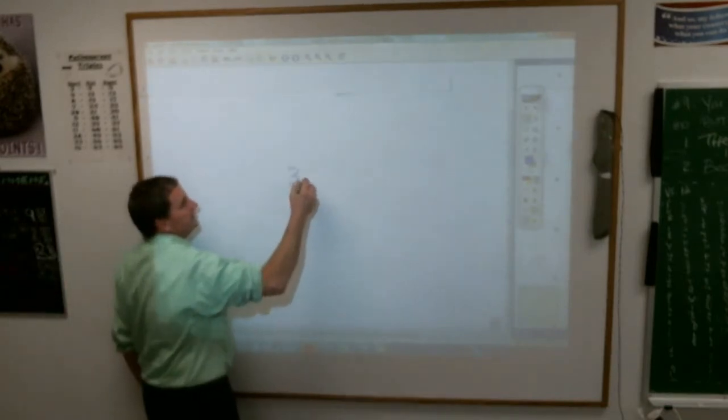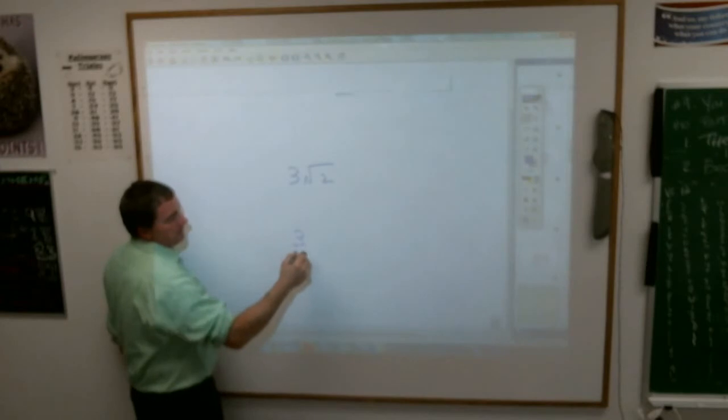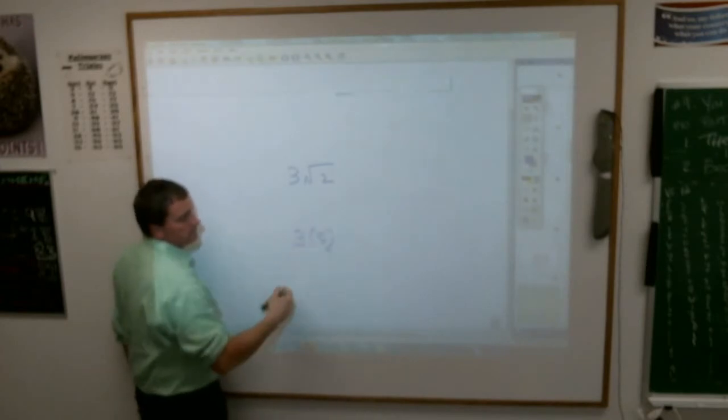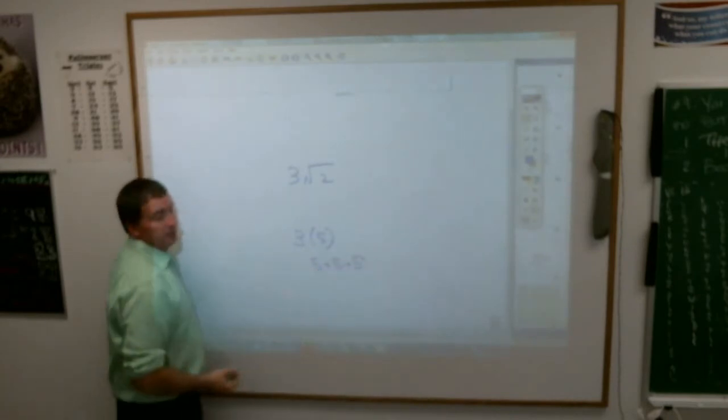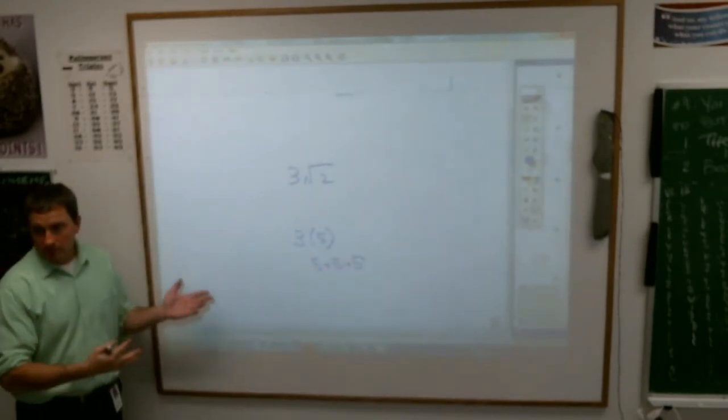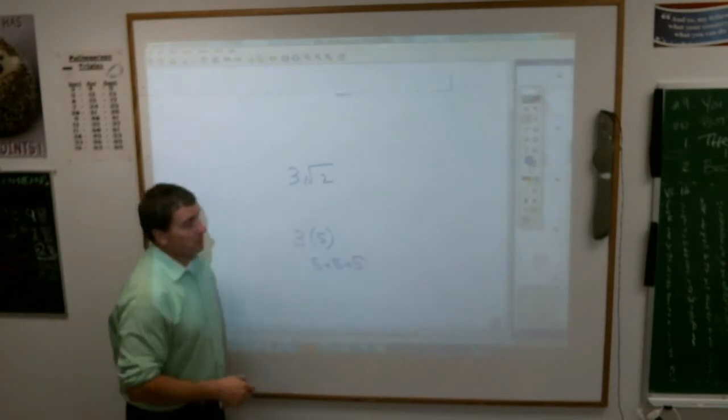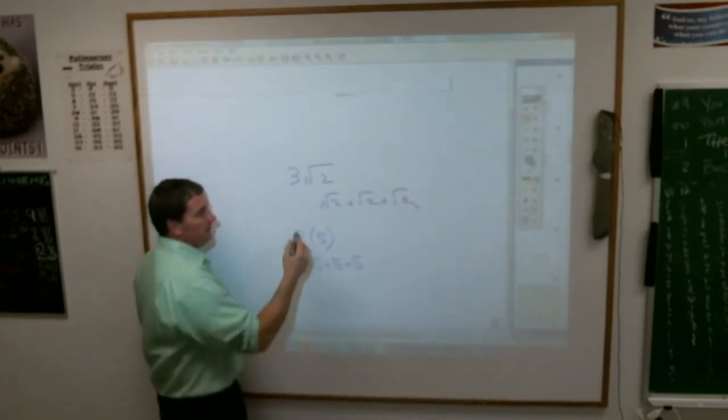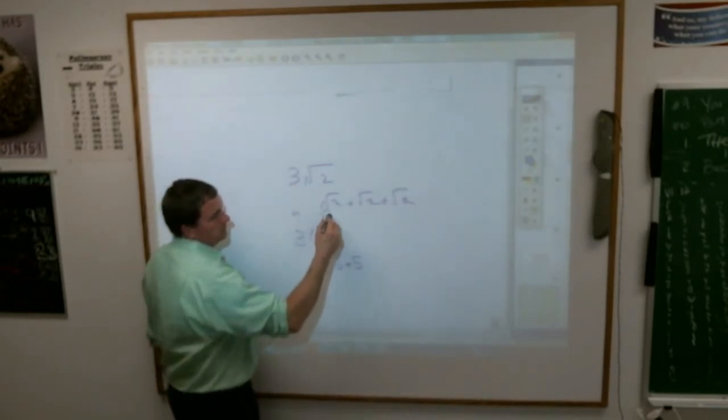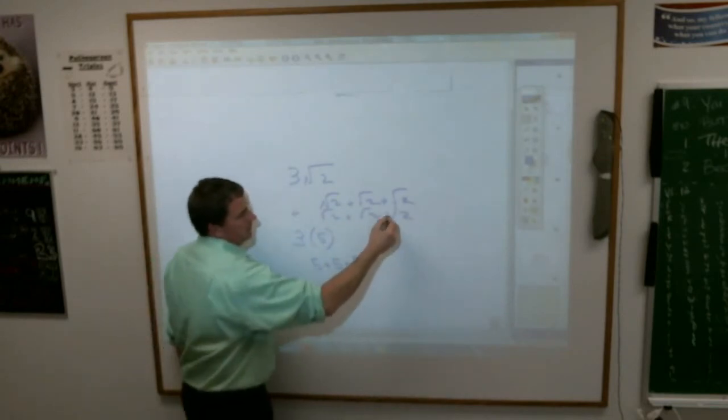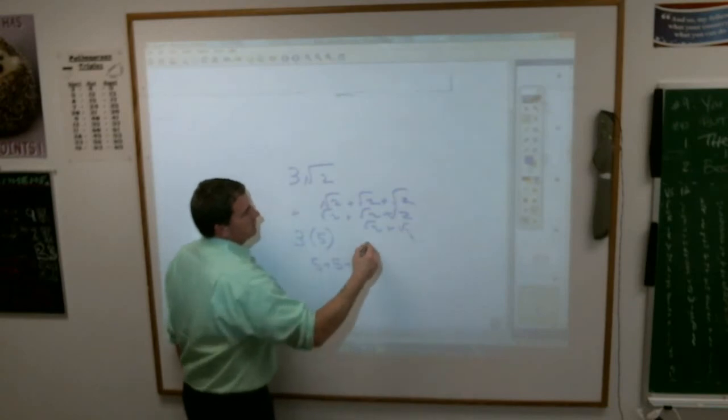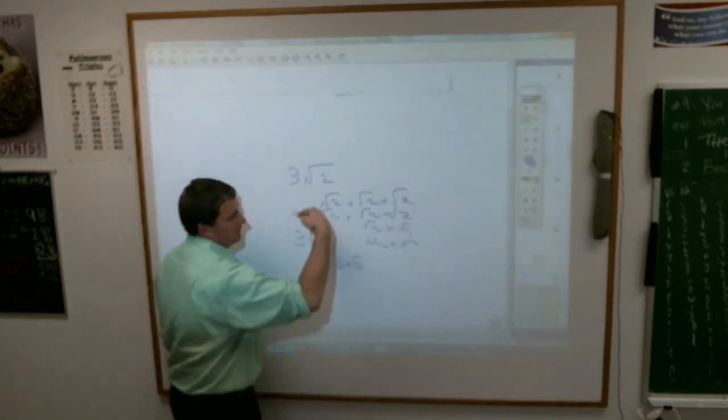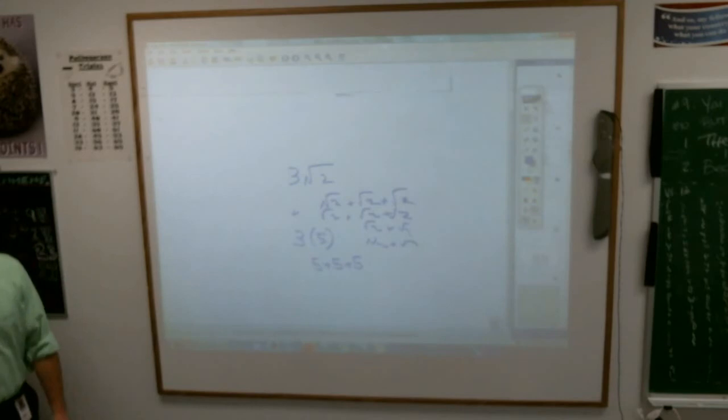Now, if you think about it, and maybe this will help you, Calvin, 3 times the square root of 2. If I have 3 times 5, what does that really mean? It really means it's the same as having 5 plus 5 plus 5, right? Multiplication is no more than multiple addition. So 3 times the square root of 2 is the same thing as the square root of 2 plus the square root of 2 plus the square root of 2. And then if I add another 3 square root of 2, I end up with another 3 square root of 2. And if I add 2 more square root of 2, and 2 more square root of 2, how many square root of 2 am I getting all together there?